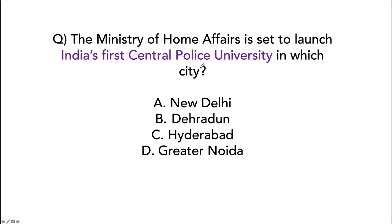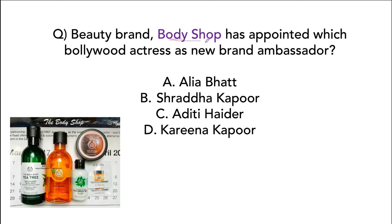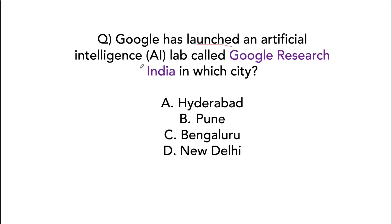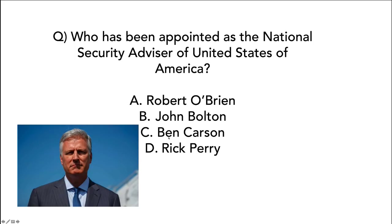The Ministry of Home Affairs is launching India's first central police university in Greater Noida, Uttar Pradesh. Body Shop, the beauty brand, has appointed Shraddha Kapoor as their new brand ambassador. Google has launched an artificial intelligence lab called Google Research India in Bengaluru, Karnataka. Robert O'Brien has been appointed as the National Security Advisor of America, replacing John Bolton.